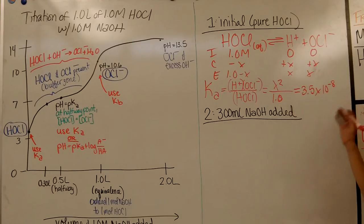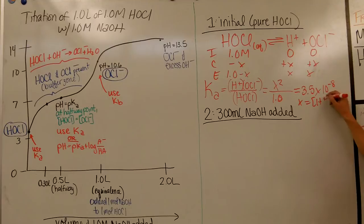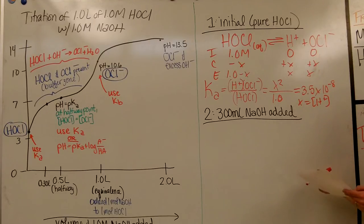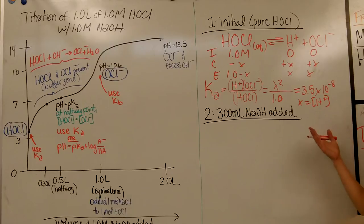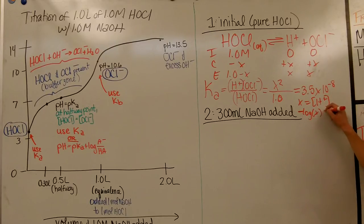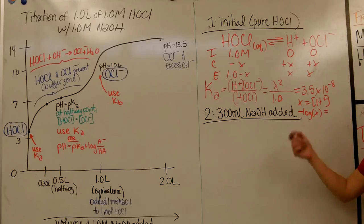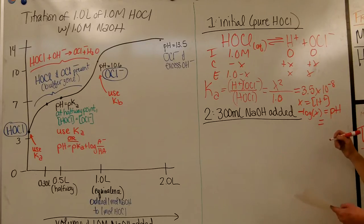If you set this up and solve for X, X gives you your hydrogen ion concentration. If you set this up in your calculator, you'll find a value for X, and then if you take the negative log of X — the negative log of the hydrogen concentration — that gives you the pH. You will find that the pH is 3.73.